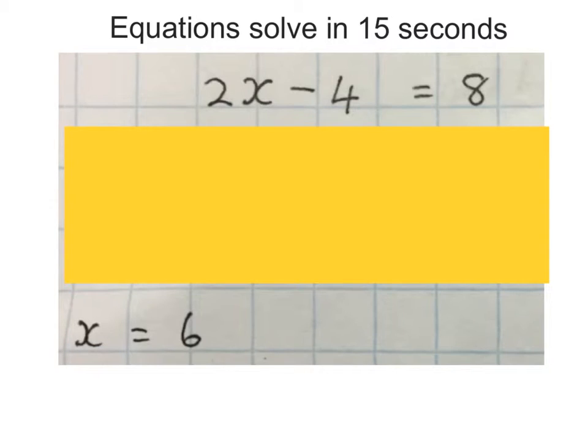Remember, you don't write these steps. You just say: I do the opposite of minus 4, so I plus 4, and then I divide by 2.